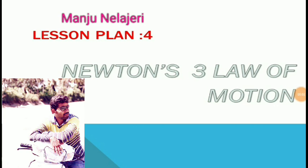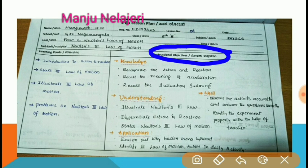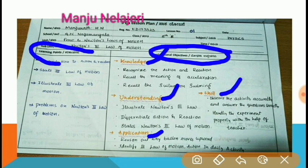In this video we are discussing how to write a PIES-based science lesson plan. The lesson plan is for Newton's Third Law of Motion. First, we decide the instructional objectives — what are the instructional objectives. These are written under the categories of knowledge, understanding, application, and skill. Next are the learning points.